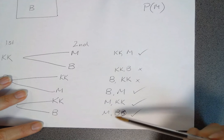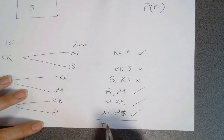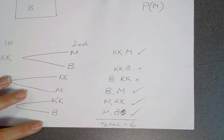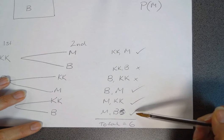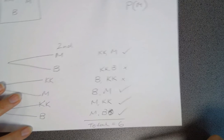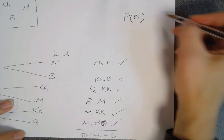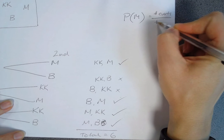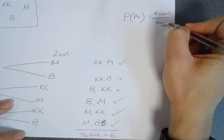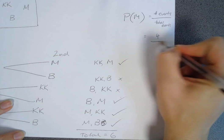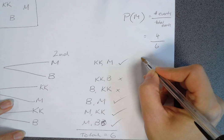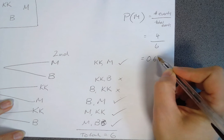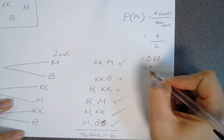So we've got a possible one, two, three, four, five, six total outcomes. There are six total outcomes, and there are one, two, three, four places where we have actually pulled out a Mars bar. So number of events divided by total events means we had four times it was pulled out out of a total possible six, which is 0.67, which is approximately 67%.